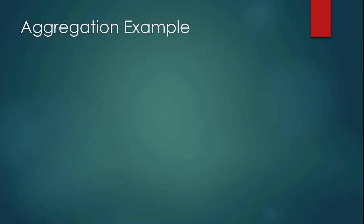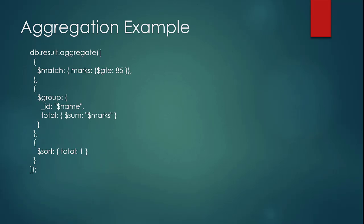Now let us see an aggregation example to understand the different components of aggregation. This is how an aggregation query looks like. I'm running an aggregation query on top of the collection 'results', and as input to the aggregation, I'm providing an array of JSON. For each JSON in the array, the key of the JSON is called a stage. Here, match, group, and sort are the stages of aggregation.